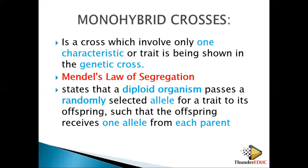Diploid means that the organism has two sets of chromosomes. For example, humans have 46 chromosomes — 23 pairs — so we say that humans are diploid. The alleles segregate randomly to the offspring, such that the offspring receives one allele from each parent.